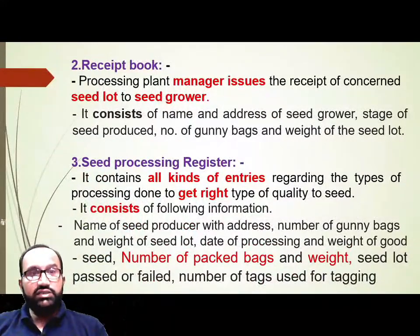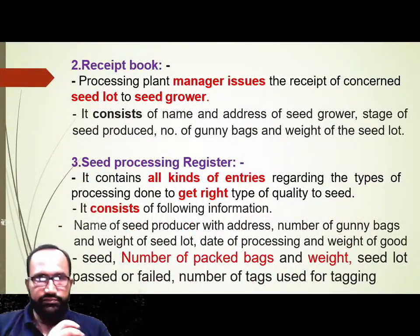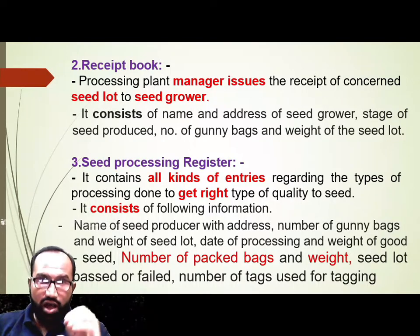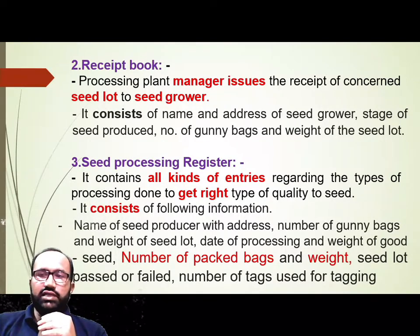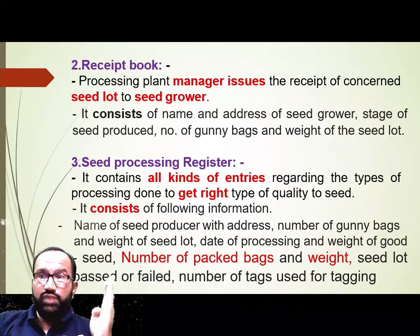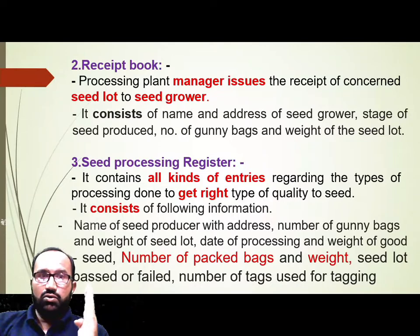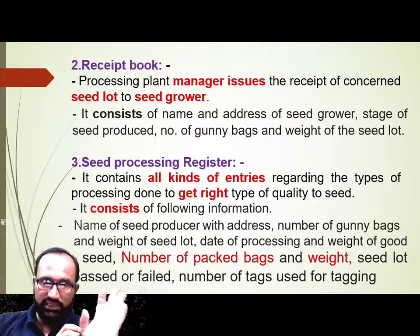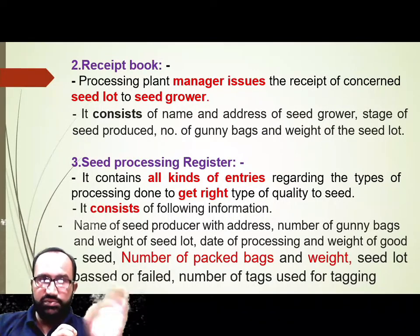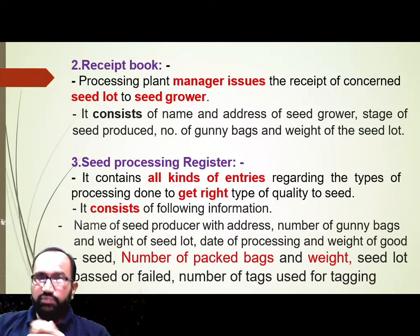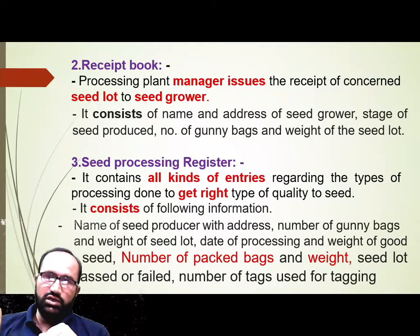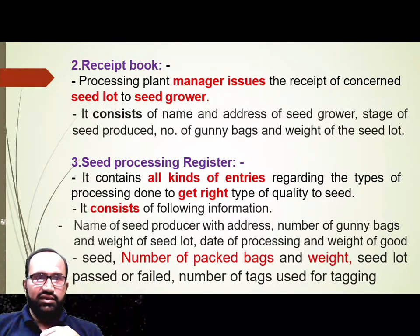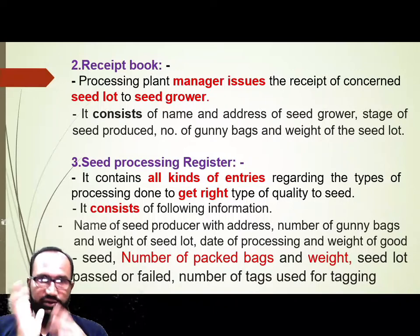The next register is the Receipt Book. The processing plant manager issues a receipt to the seed grower for the seed lot received. After entry in the Inward Register, the next step is the Receipt Book. It consists of: name and address of seed grower, stage of seed produced, number of gunny bags, and weight of the seed lot. The entry is made in the Receipt Book.